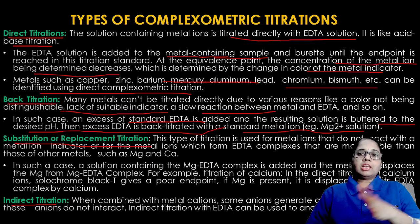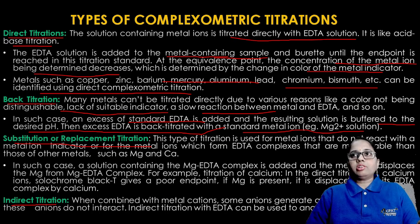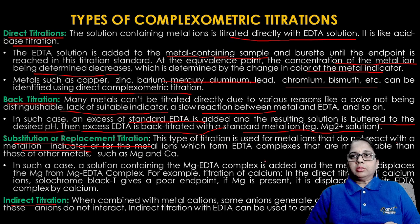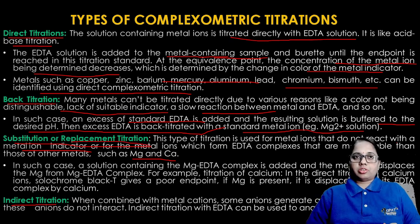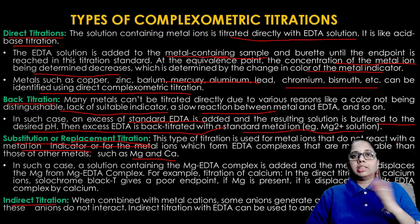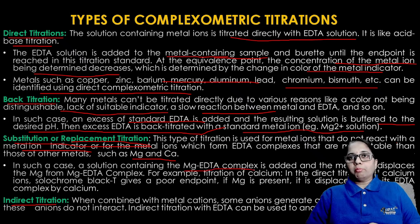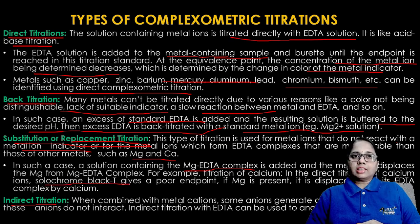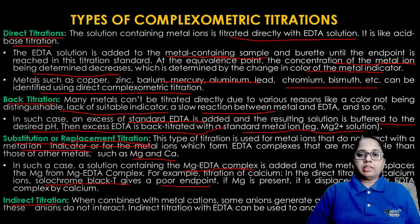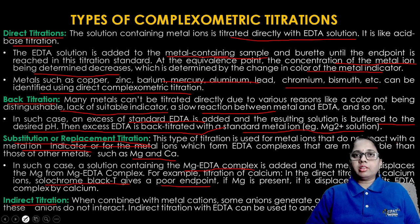(3) Substitution or replacement titration — used for metal ions that do not react directly with the indicator. A solution containing the magnesium-EDTA complex is added, and the target metal ion displaces the magnesium from the magnesium-EDTA complex. For example, in the direct titration of calcium ions, solochrome black T gives a poor endpoint; if magnesium is present, it is displaced from its EDTA complex by calcium.